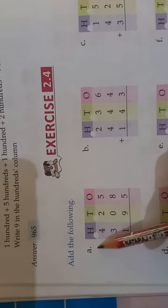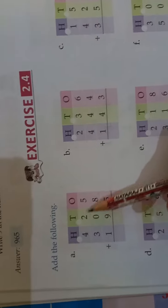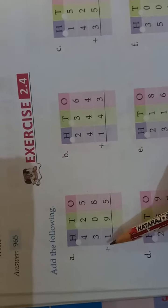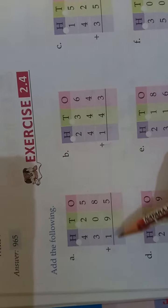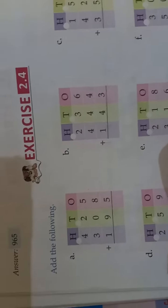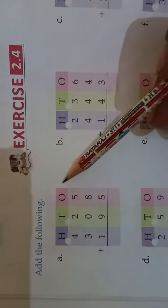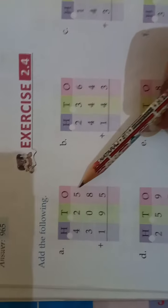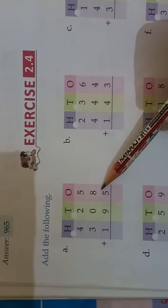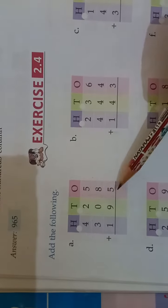Add the following. Problem A is we have to add 425 plus 308 plus 195. So now let's start. First of all we start from ones. At the ones place it is 5, it is 8, and it is also 5. First of all we will read this column.